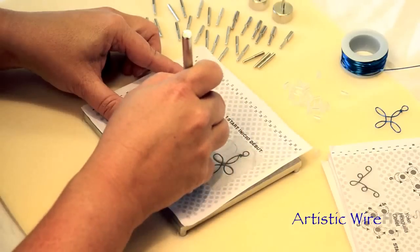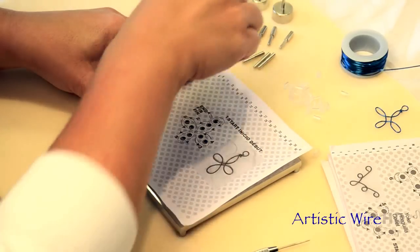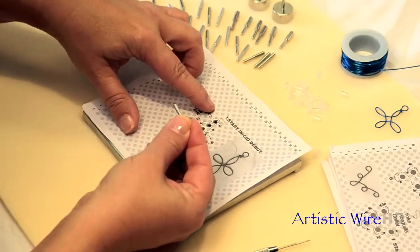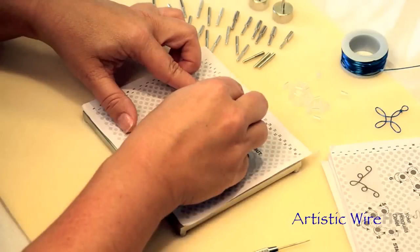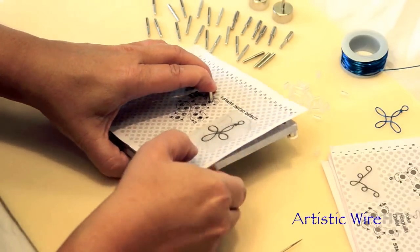So I'm going to take one of the smaller pegs and insert it right here where it says start. And then remember this kit comes with the peg caps, so I'm going to take that cap.